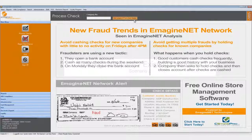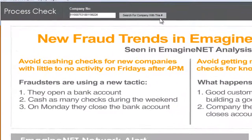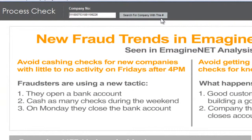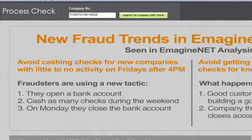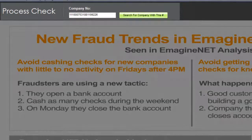We start by scanning the check through the check reader device. As soon as the maker data is picked up by the check reader, you can select the 'Search Company with this Number' button.